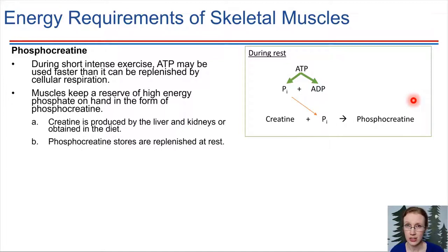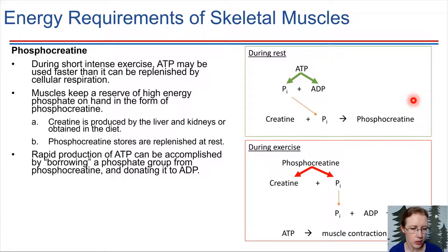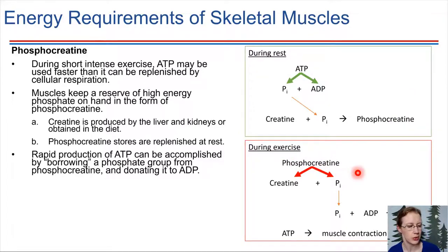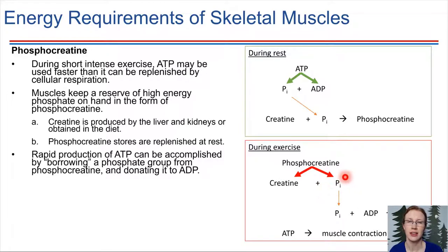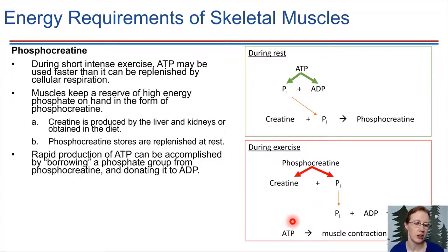During intense exercise, if our muscles can't keep up with ATP production by cellular respiration, they will tap into this phosphocreatine molecule. Phosphocreatine can be cleaved back into its components — creatine and phosphate — and that high energy phosphate can be used to form ATP. This is a quick way to get more ATP, which in turn allows crossbridge formation and muscle contraction to take place.